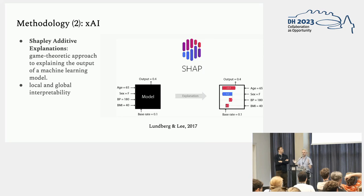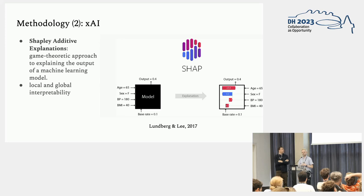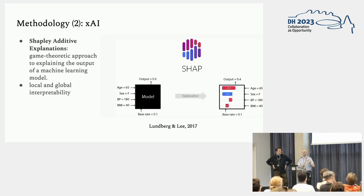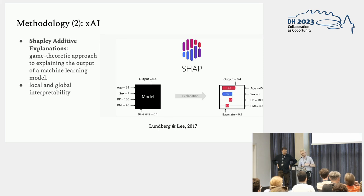We can do machine learning and get an accuracy number, but we also wanted to understand what is actually going on — can we dive into how the algorithm works? For this, we turned to Shapley Additive Explanations (SHAP), which uses a game-theoretic approach to explore and explain the output of a machine learning model. Rather than just giving global feature importance scores, this method also provides local interpretability — for every single decision, such as is this image Orient or Occident, you can see the importance of each feature, giving you a lot to work with to understand what was actually going on.